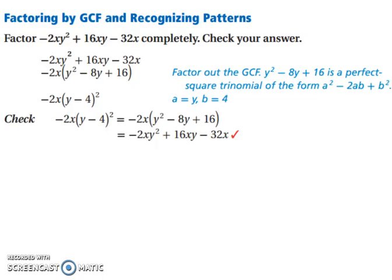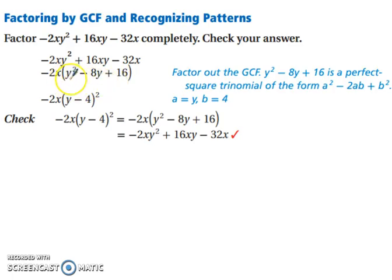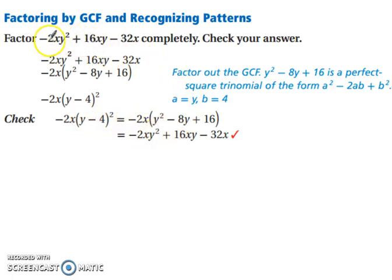Let's look at an example: negative 2xy squared plus 16xy minus 32x. We have a greatest common factor of negative 2x, which we take out, leaving y squared minus 8y plus 16. This is a perfect square trinomial. The square root of y squared is y, square root of 16 is 4, and we take the minus from our b term. So we get negative 2x times the quantity y minus 4 squared. You can always check by multiplying back out.